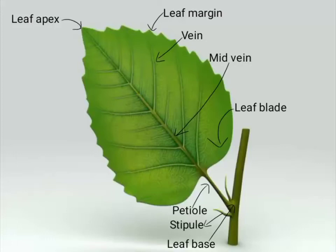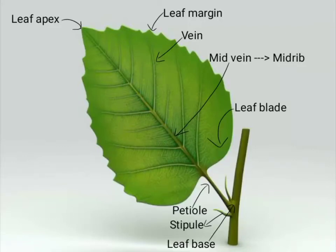The mid vein of a leaf is called mid rib. The broad spread out part of a leaf is the leaf blade. The stalk of a leaf is the petiole. Small leaf-like structures are stipules.